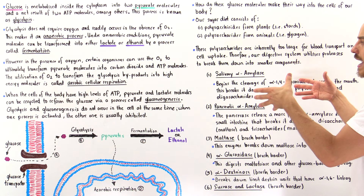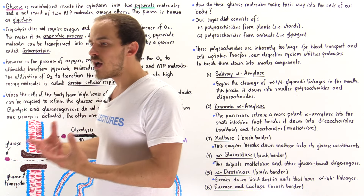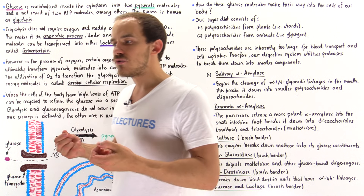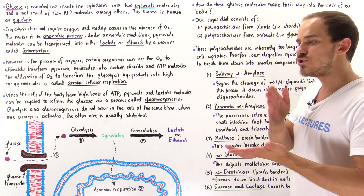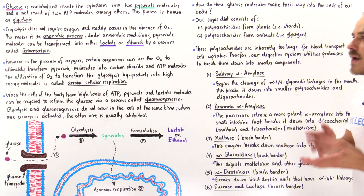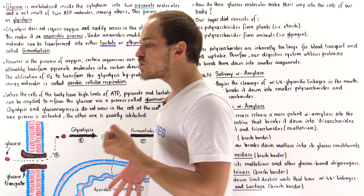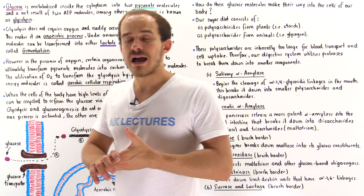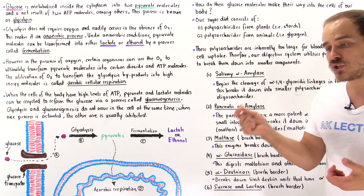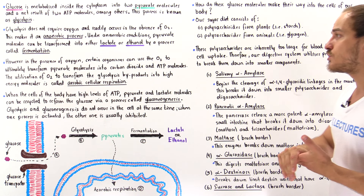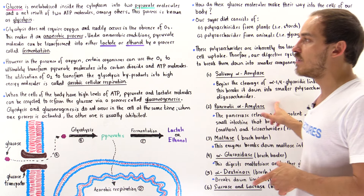From the mouth, food moves via the esophagus and eventually makes its way into the stomach. In the stomach, nothing actually breaks down — the glycosidic bonds don't break down there. But once it makes its way into the small intestine, the rest of digestion takes place because the pancreas produces a specific type of carbohydrate digestive enzyme known as pancreatic alpha-amylase.